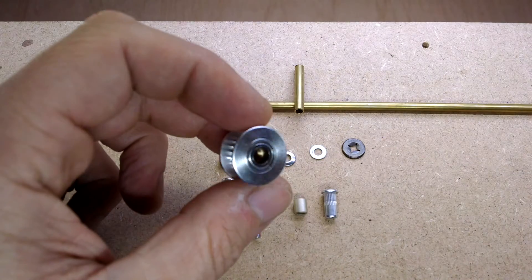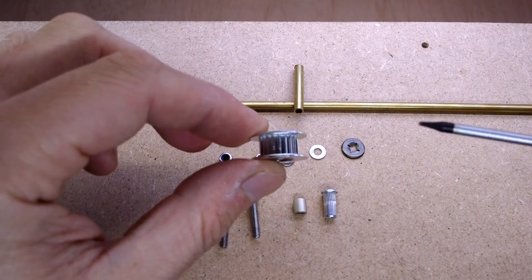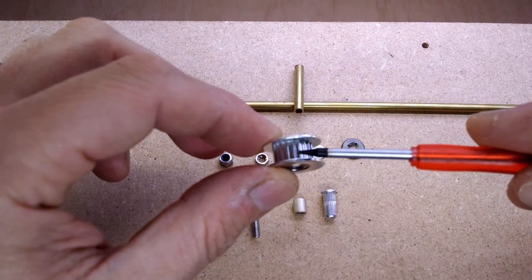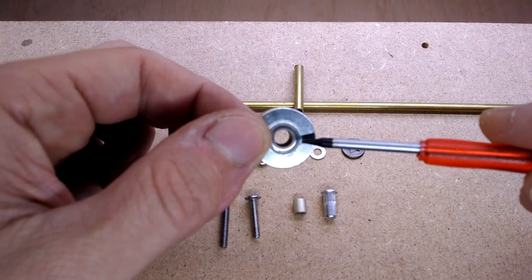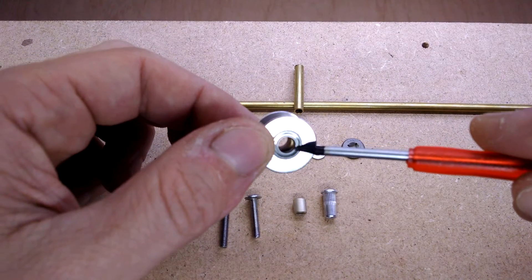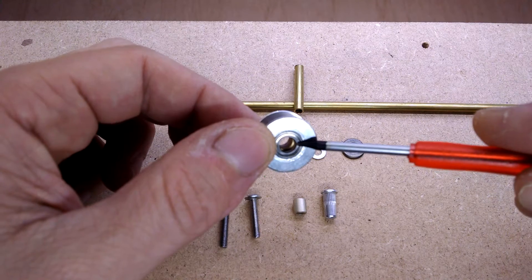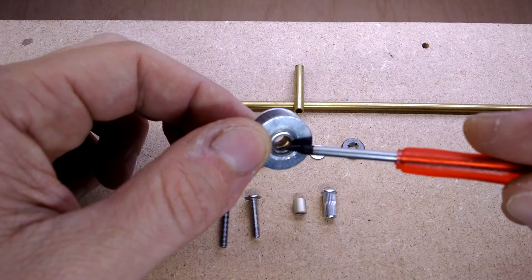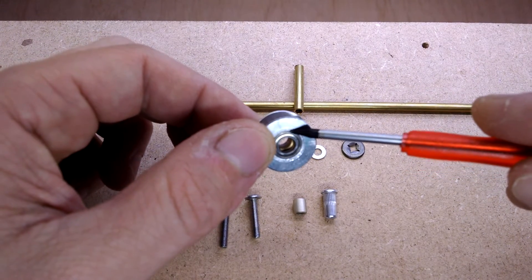There's been a question recently on 3D Printed Life's channel. Andrew over there was having problems getting a way of mounting these bearings against his structure in a way that didn't bind the outside of this bearing.